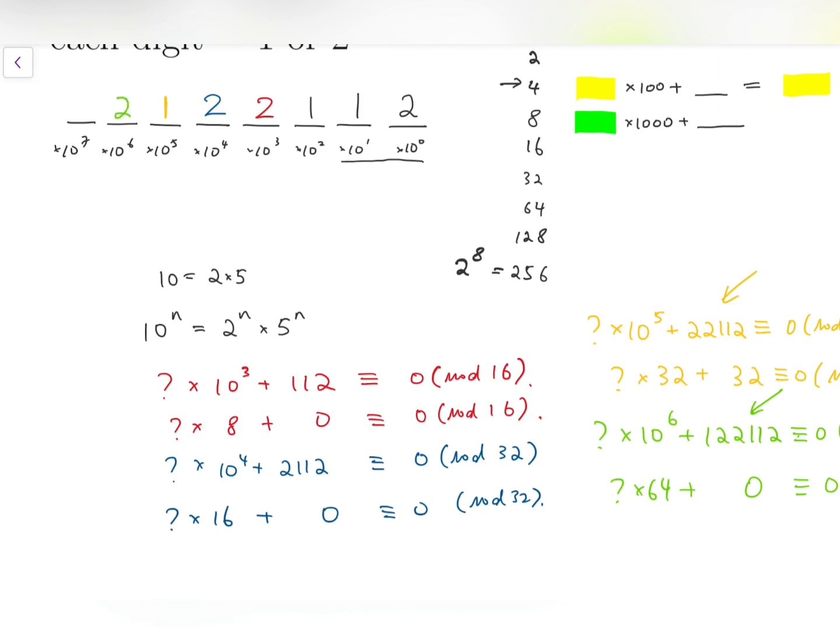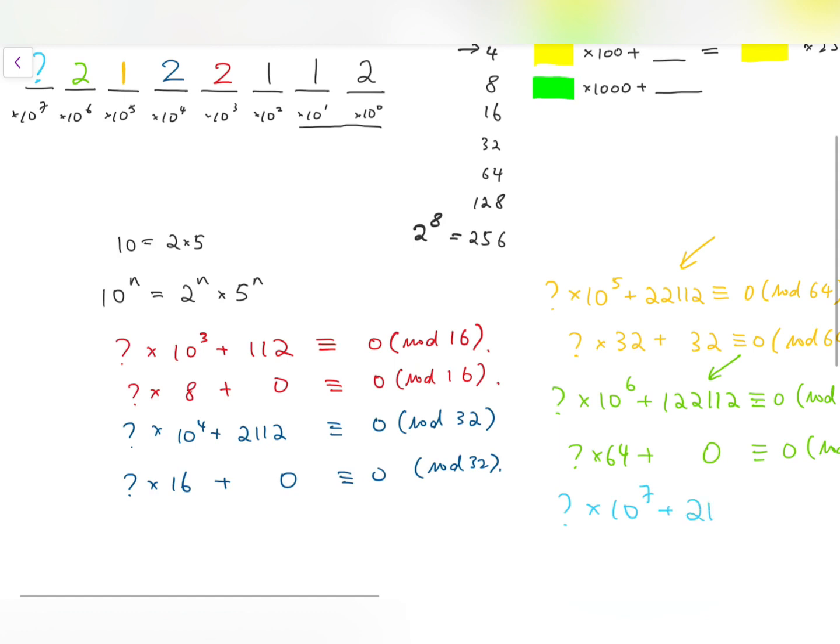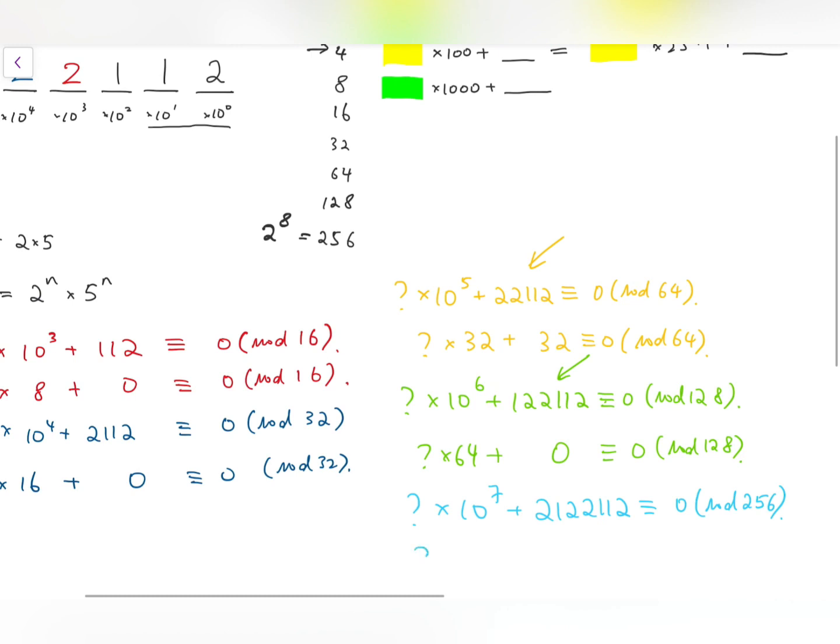And finally for this, the blue question mark times 10 to the power 7 plus 2122112 is congruent to 0 mod 256. So the blue question mark times 128 plus the blue number divided by 256. So maybe we need some calculations.